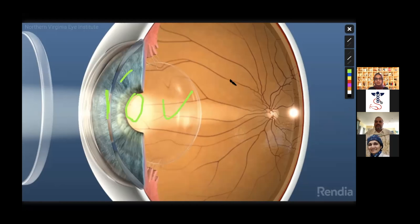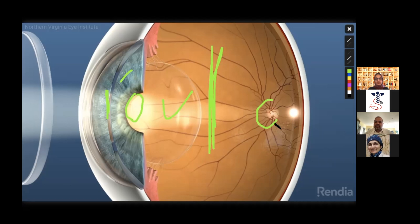And then we have a large empty space back here, which is known as the vitreous space. This is a chamber filled with a gelatinous substance called vitreous. And then back here, we have the optic nerve, and this entire lining in the back of the eye is known as the retina.